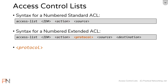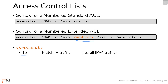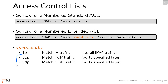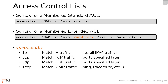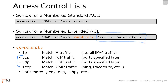Next, we have the protocol field. There is no protocol field in a standard access list — it can only filter on the IP protocol. In an extended access list, you can filter on different protocols. You can specify IP to match all IP traffic, TCP or UDP (which also lets you specify ports later), ICMP to match pings and traceroute, or other protocols like GRE or IPsec. Keep in mind, this field does not mean ports — ports are specified separately.